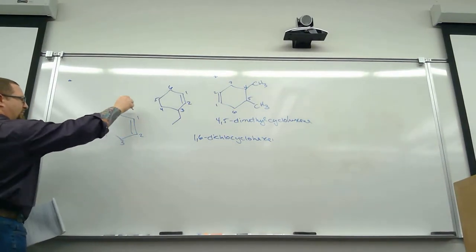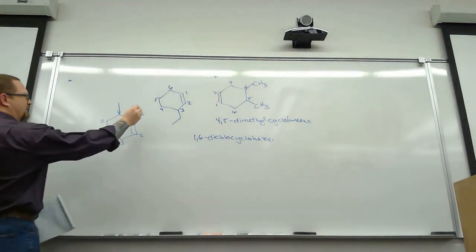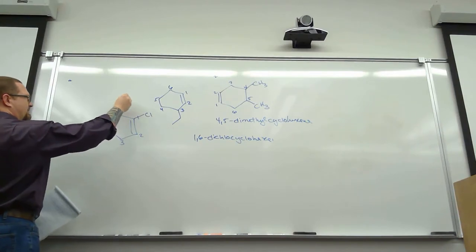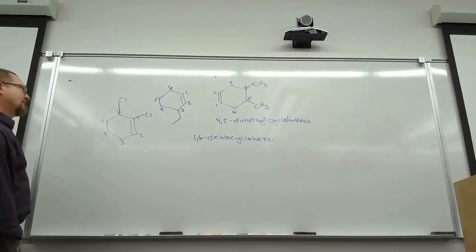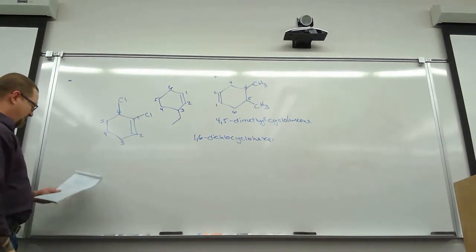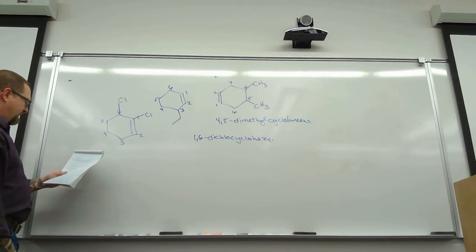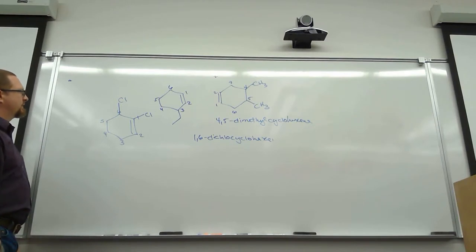Because you always have to number through the double bond. Always. So it's about the lowest number on the first substituent — the single smallest number, not some sum. If you had two substituents that are equidistant from the double bond on either side, you'd go for the side with the closest substituent first. That would be seven versus five, so you pick five — the single smallest number for the first substituent.